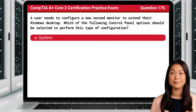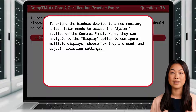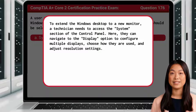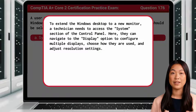System. To extend the Windows desktop to a new monitor, a technician needs to access the System section of the Control Panel. Here, they can navigate to the Display option to configure multiple displays, choose how they are used, and adjust resolution settings.